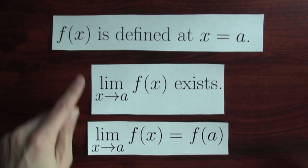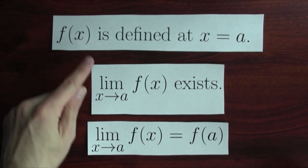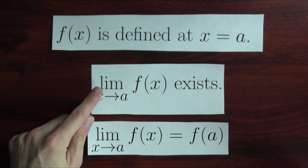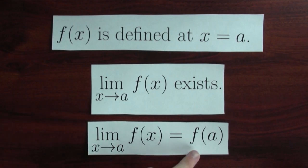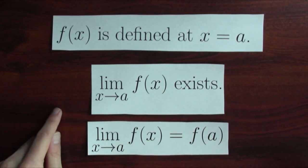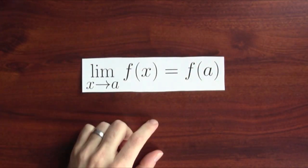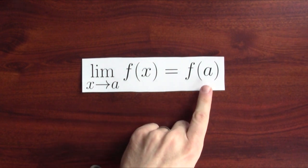It's really these three parts: the function has to be defined at the point, the limit has to exist and be equal to some number, and then I can say that that number — the limit — is equal to the function's value. Does it make sense to talk about the function at that point? Nothing we've done so far really captures the idea that the graph is a single continuous curve — we've always just been working at a single point. This is the definition of continuity at the single point A.